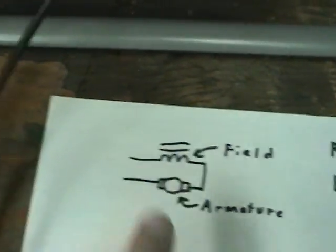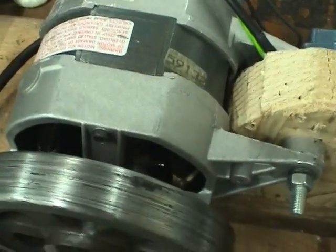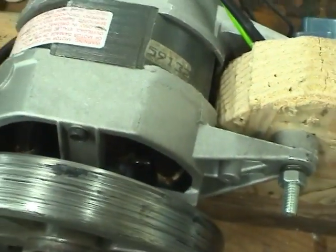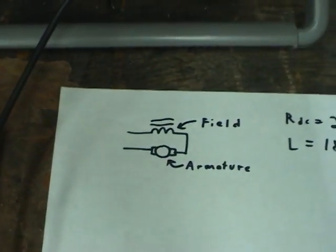in series with the field winding, which is the two coils on the outside. And because there's a piece of iron around it, that gives it a high inductance. And inductance has the property of wanting to resist the change in current.